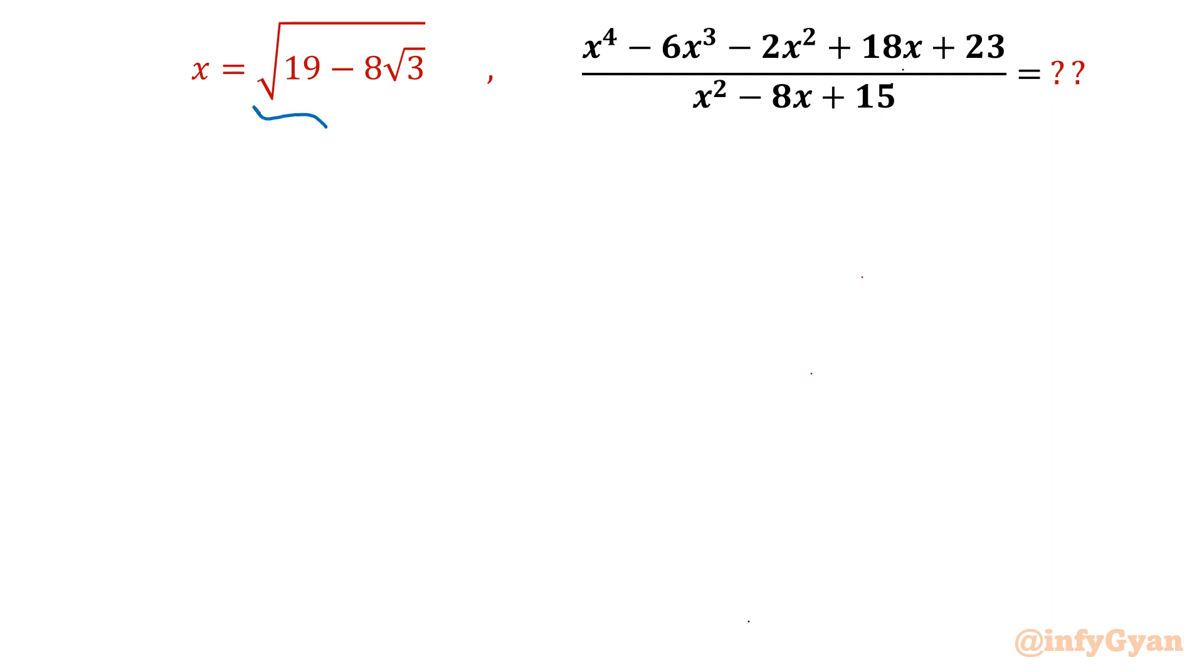I will consider this term. See, 19 - 8√3 I am taking. I will split 19 into 16 + 3. Rest would be as it is. 16 can be written as 4^2.